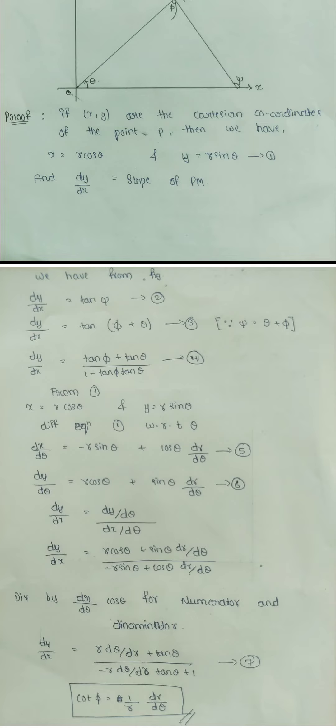dy by dx equals tan of (ψ plus theta). Take it as equation 3. Expanding: dy by dx equals (tan ψ plus tan theta) divided by (1 minus tan ψ times tan theta). Take it as equation 4.